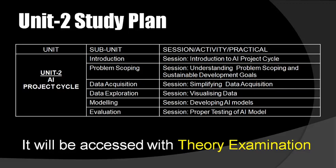In the first subunit I will give you the introduction of AI project cycle. The second subunit is problem scoping, where I will tell you about problem scoping and the sustainable development goals. Third is data acquisition, which covers collecting data. Data exploration is the next session through which you can understand how to visualize data in pictorial formats. Then next is modeling, which is the important part of developing AI models where you think about the proper algorithm. Next is evaluation, the last part of the AI project cycle which is the proper testing of the AI model. This way you will complete the whole study plan one by one.